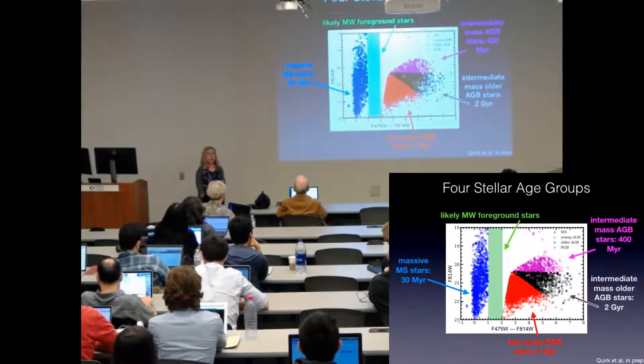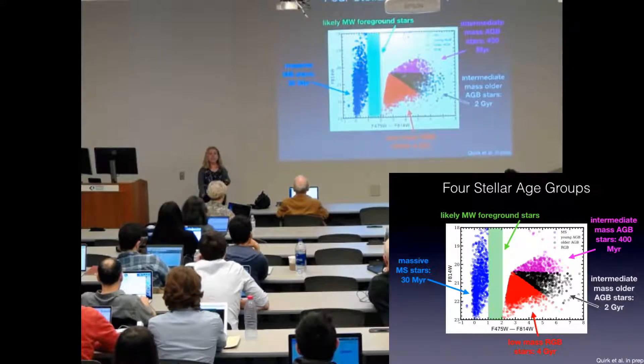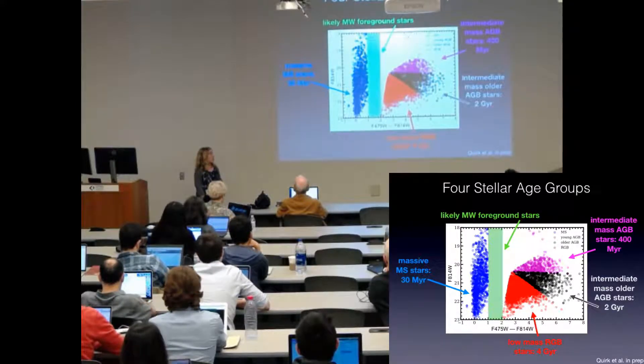You can see there's a part of the color magnitude diagram that I avoid because this area is likely to be populated by Milky Way foreground stars.